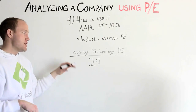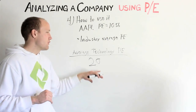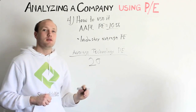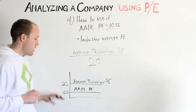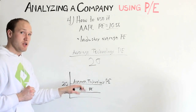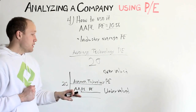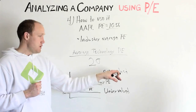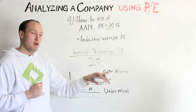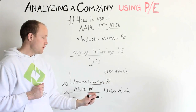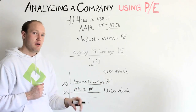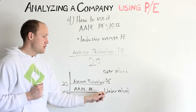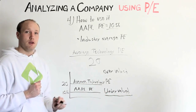The average technology PE is roughly around 20. Apple's PE is 10.56. Apple's PE is below the technology industry average. Anything below industry average is considered undervalued, and anything above is considered overvalued. This is one way of using PE to analyze a company — using just the industry average, you can see Apple is undervalued.